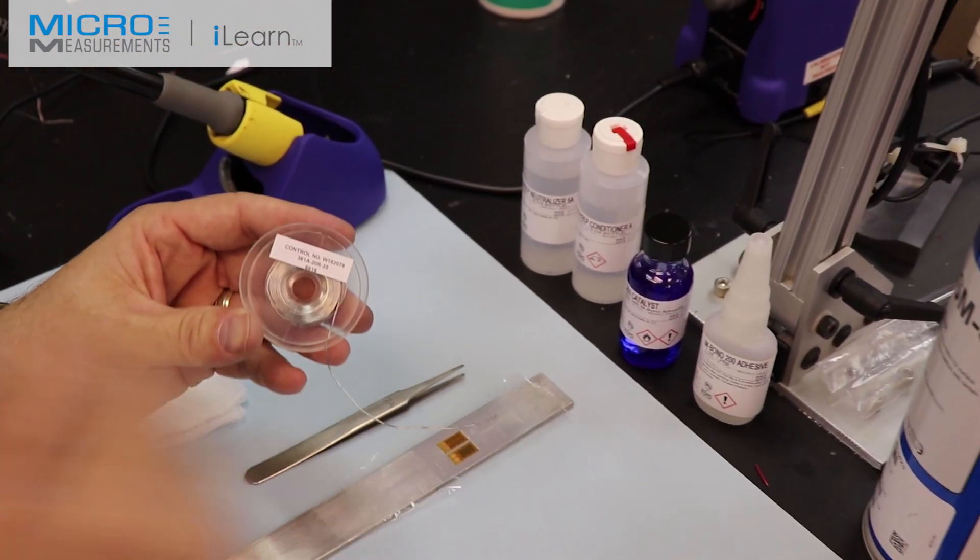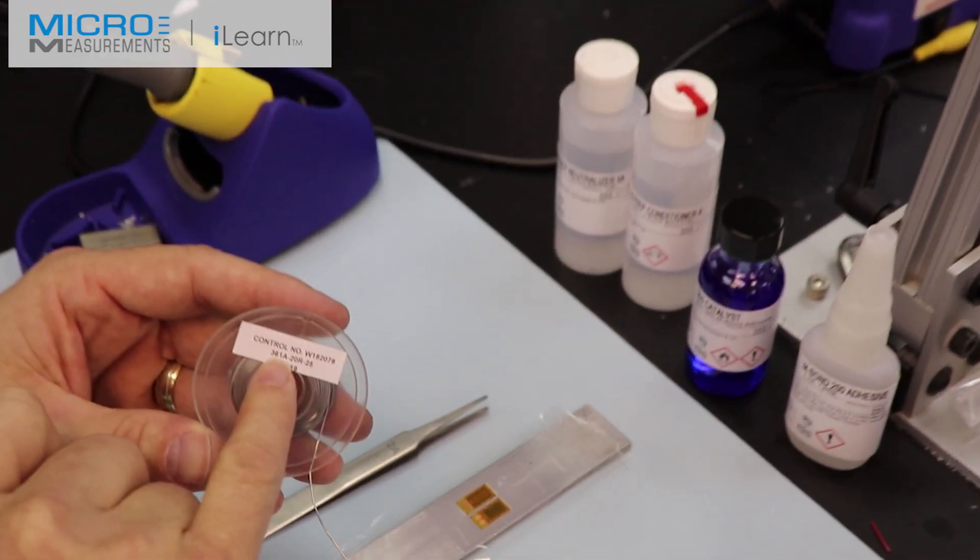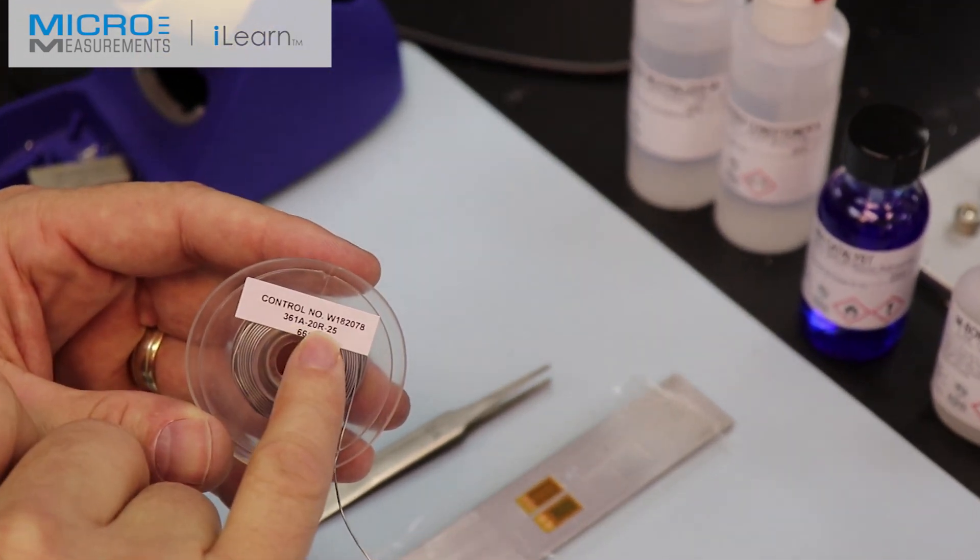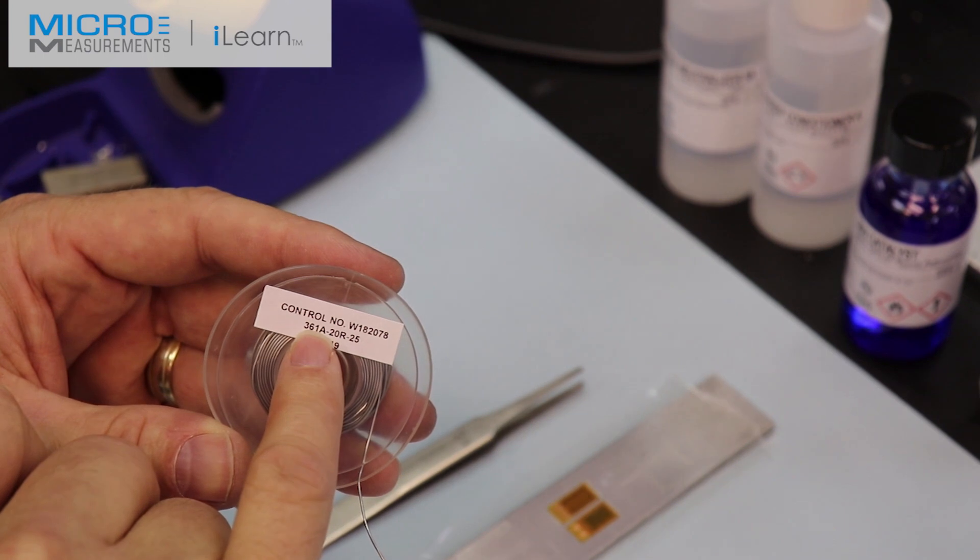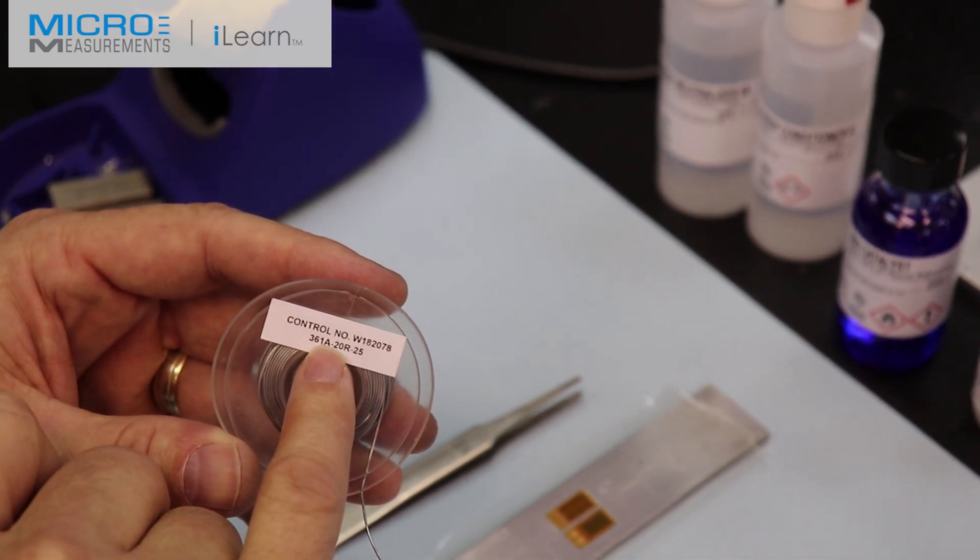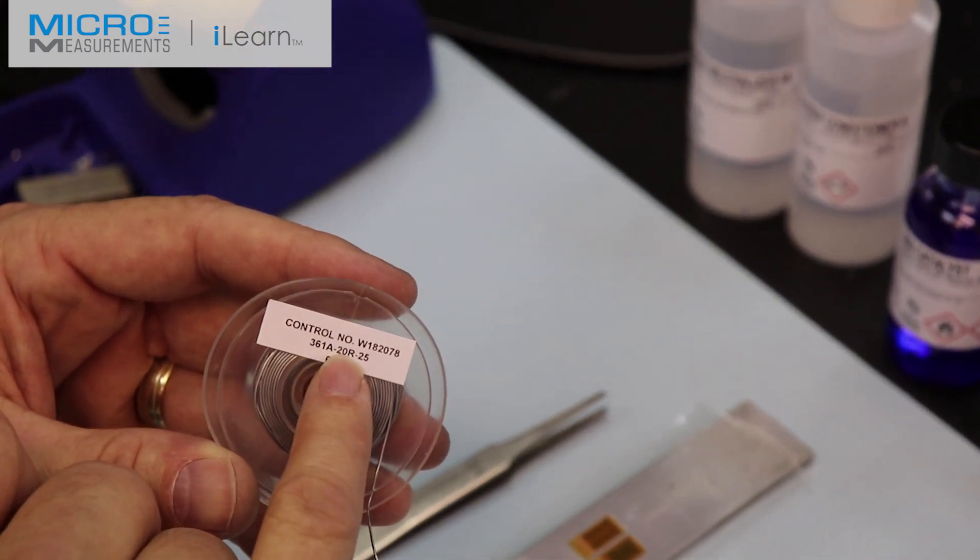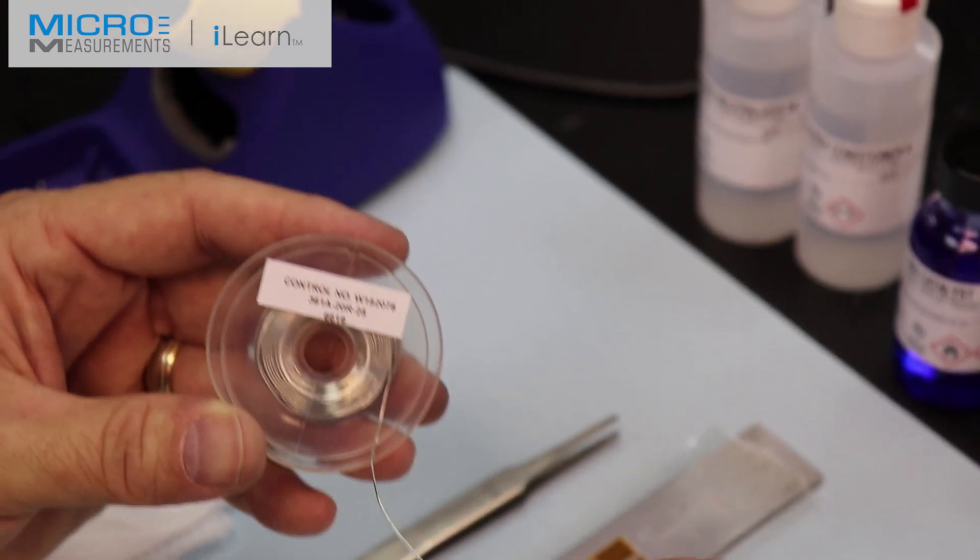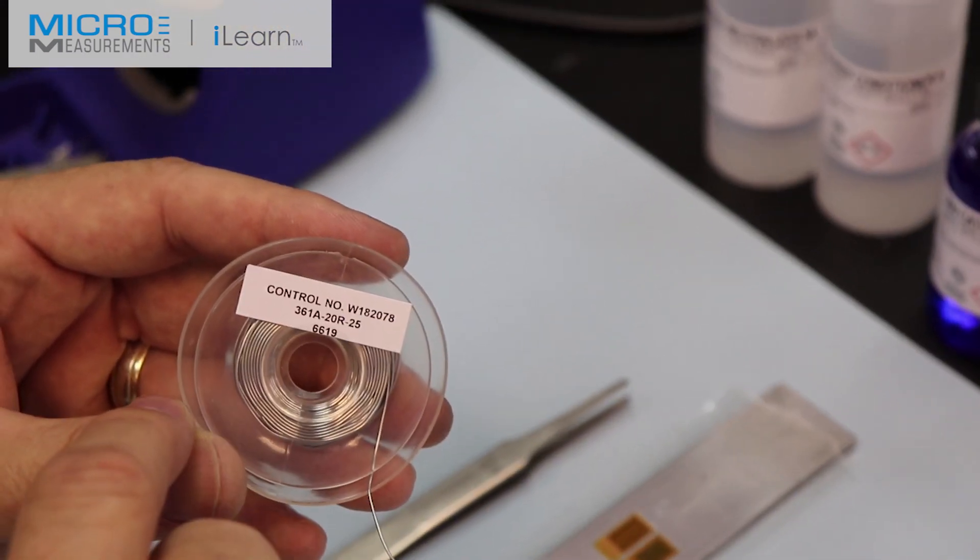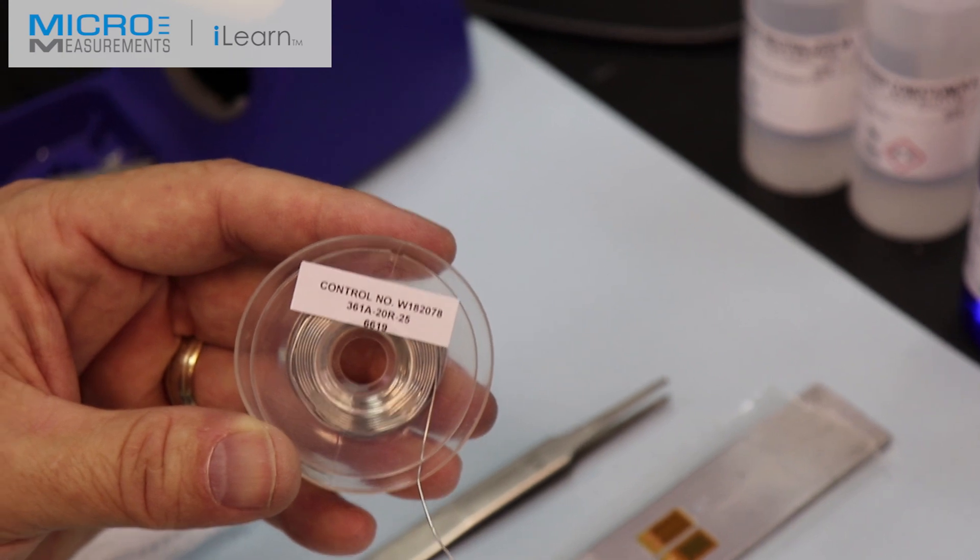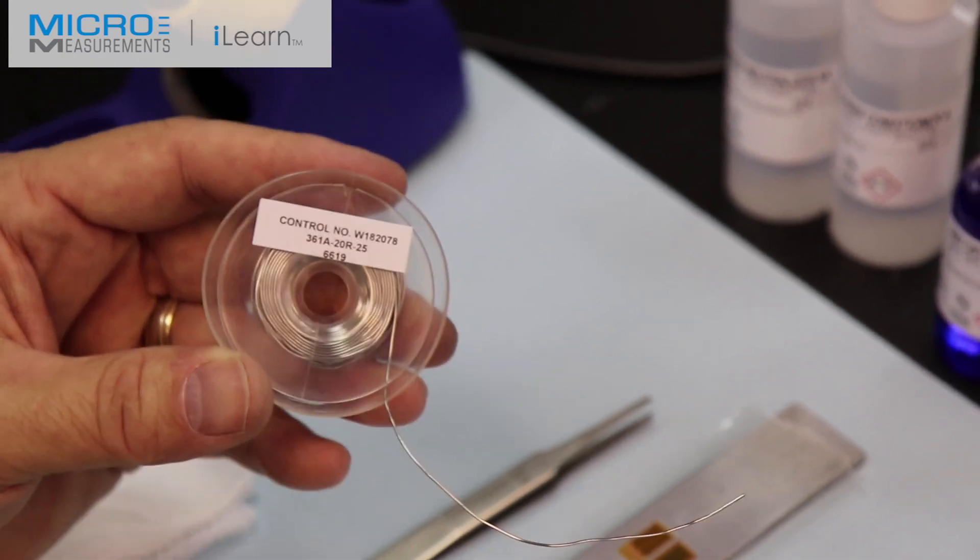And we're going to use the solder. This is eutectic solder. It's 361A-20R-25. 361 is the melting temperature. The A means it has antimony. The 2-0 is the diameter of it. R means it has a rosin flux core. And then the 2-5 is the length of it. It's a 25 foot spool.